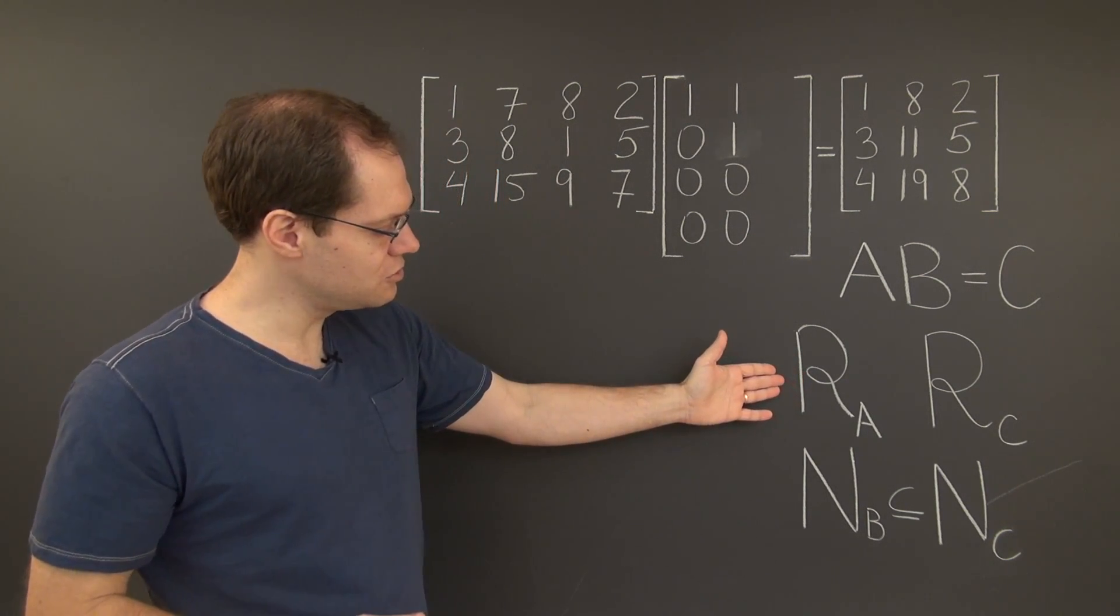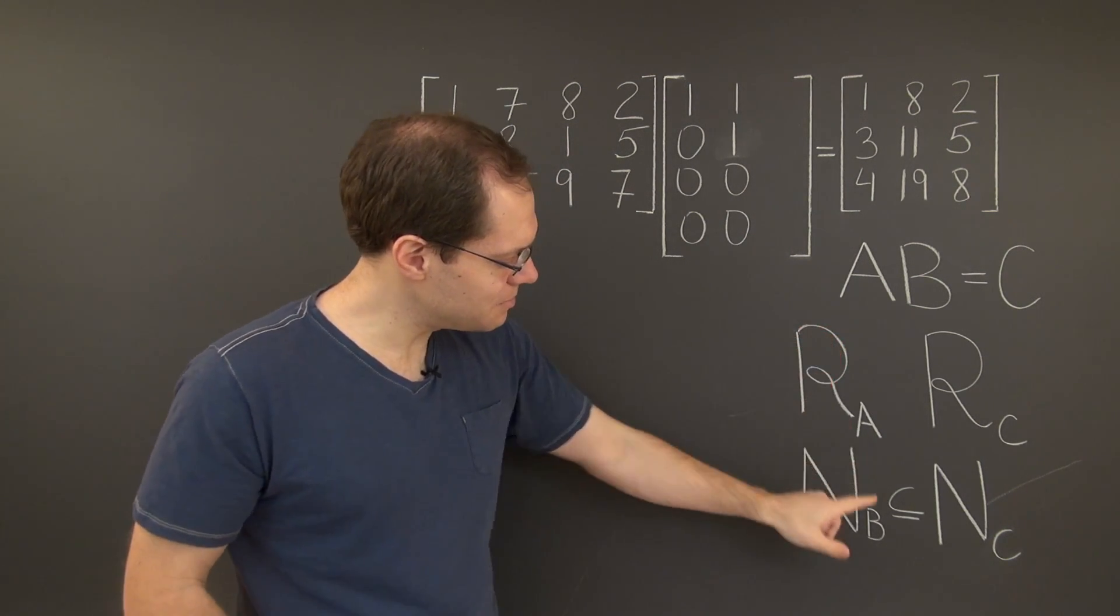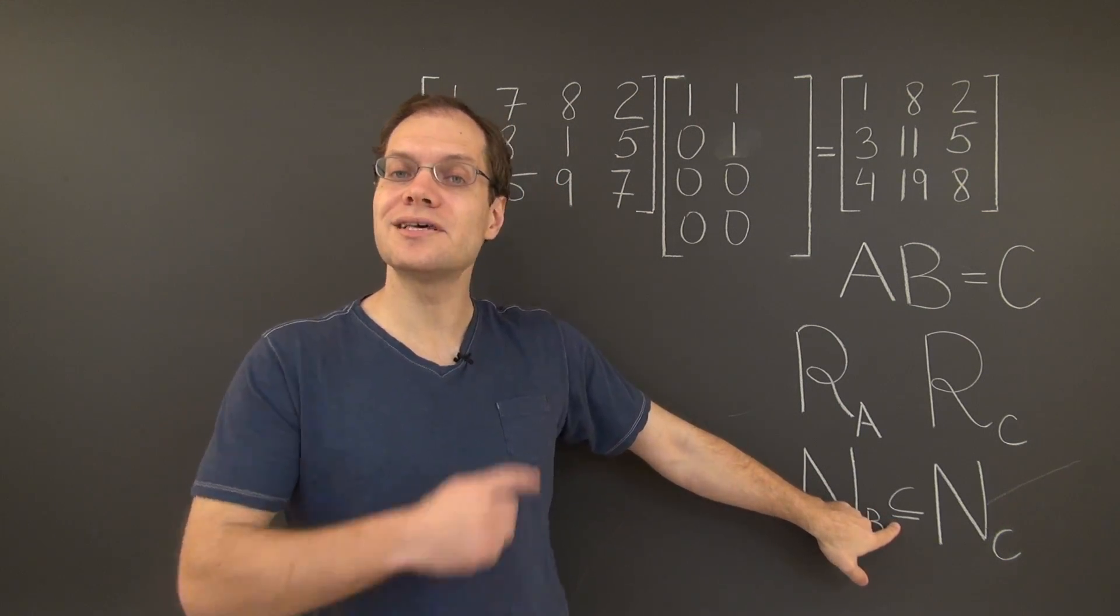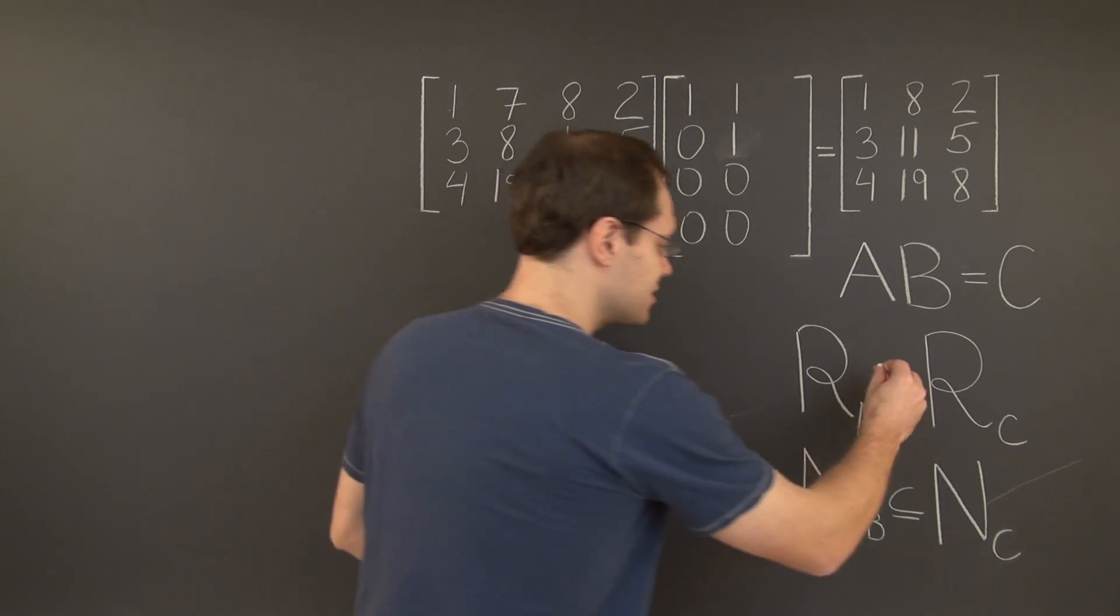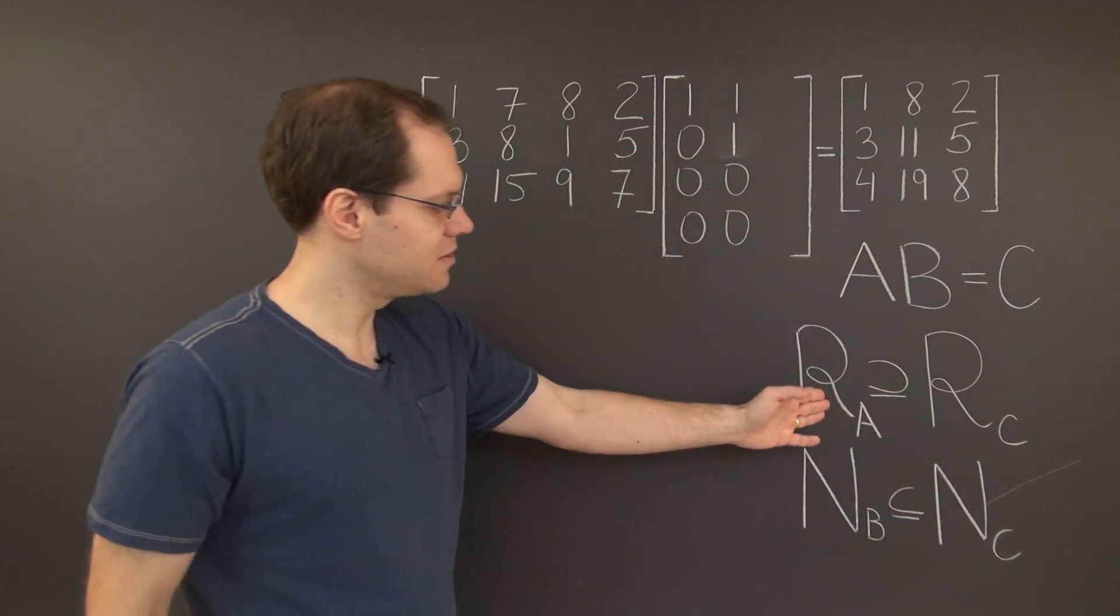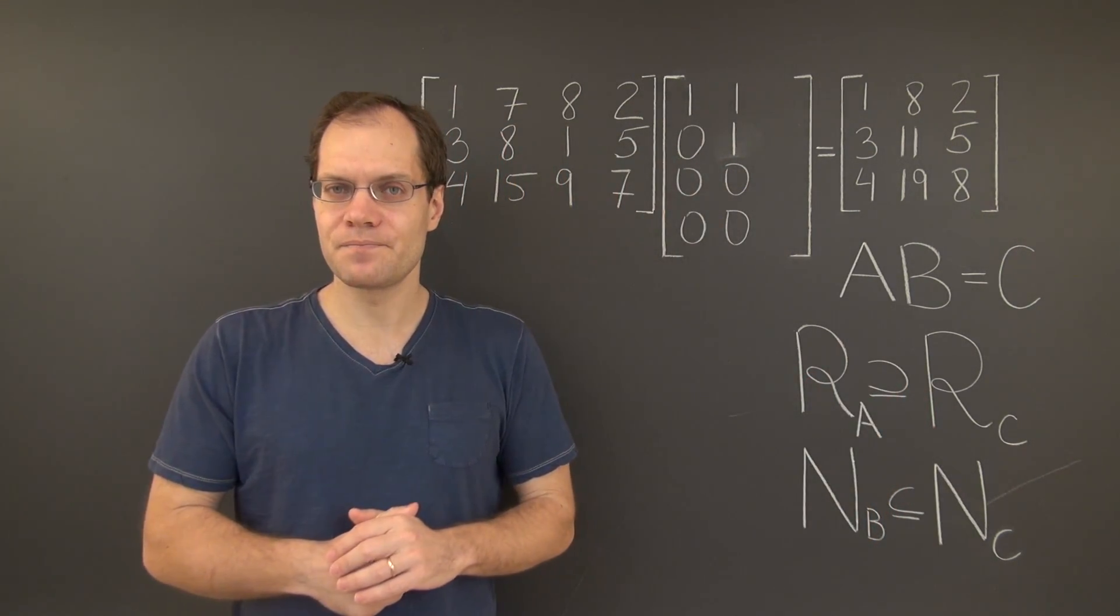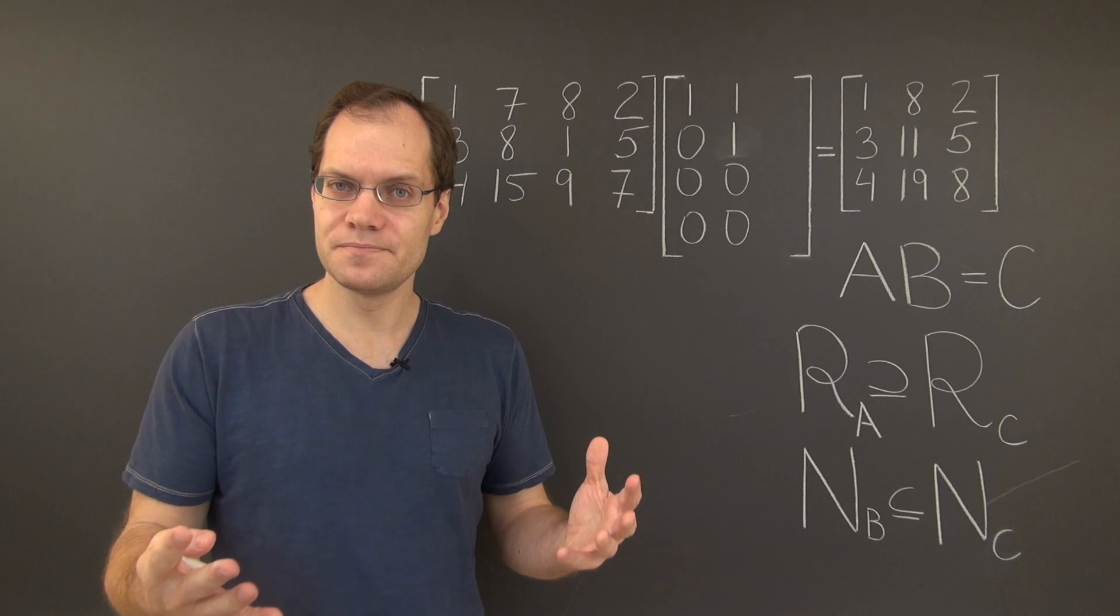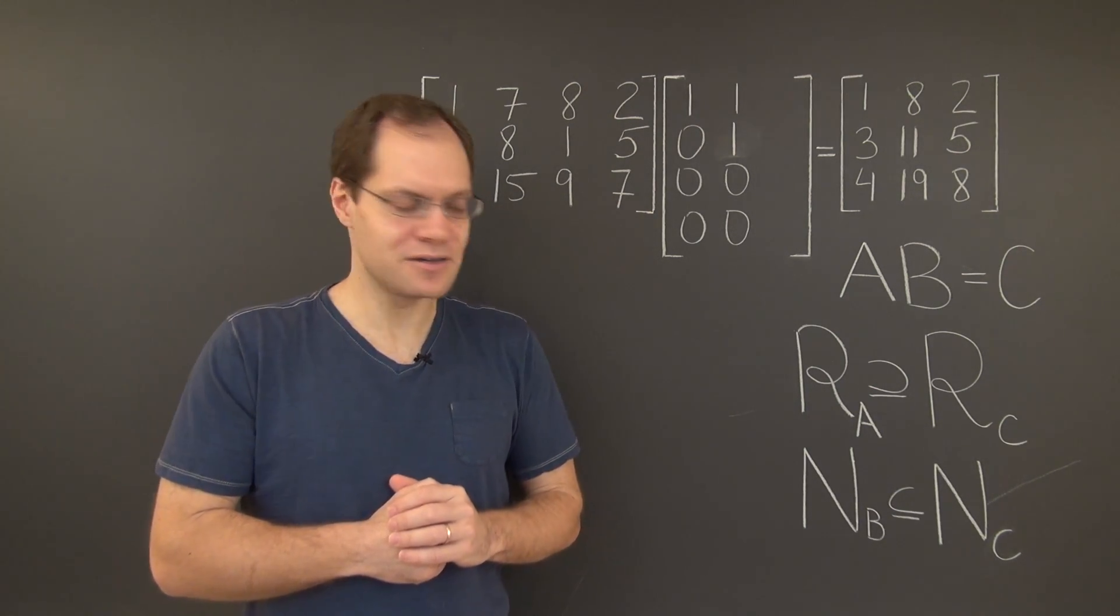So coming to this conclusion, the relationship is similar except the sign points in the opposite direction. Because it is now the column space of C that's a subspace of the column space of A. Can it be smaller? Yes, of course it can be smaller.